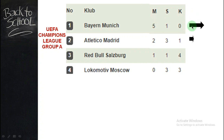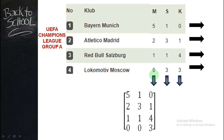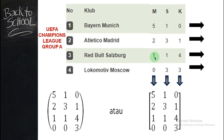Dalam 6 kali pertandingan, M itu menang, S itu seri, K itu kalah. Ketika saya menggaris bawahi untuk 5, 1, dan 0, dia merupakan hasil pertandingan dari klub Bayern Munich. Kemudian baris berikutnya ada hasil pertandingan Atletico Madrid: 2, 3, 1. Dan selanjutnya untuk 0, 3, 3 adalah hasil pertandingan Lokomotiv Moscow. Tetapi ketika saya ubah, 5, 2, 1, 0 — itu M, M tadi menang. Hasil kemenangan untuk 4 klub pada grup A: Bayern menangnya 5, Atletico menangnya 2, Red Bull Salzburg menangnya 1, Lokomotiv Moscow menangnya 2.